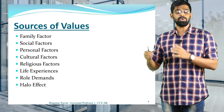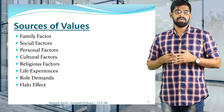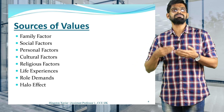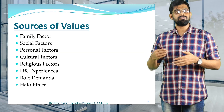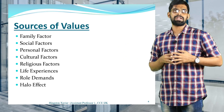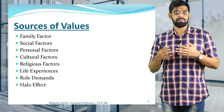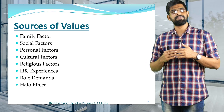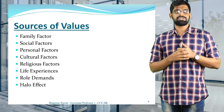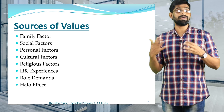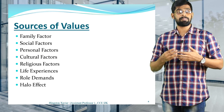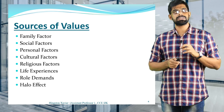The next source is role demands. According to your roles in life, you develop certain values. For example, as a teenager your value system is different; when you get married it changes because your responsibilities increase; and when you become a father or mother it changes again. The last source is the halo effect, which refers to values being improved and polished through your peer group and informal gatherings. These are the sources of values in our society.